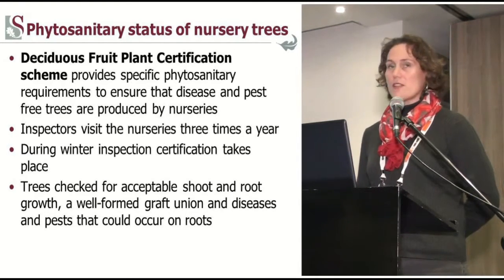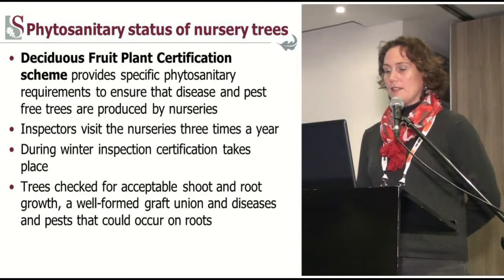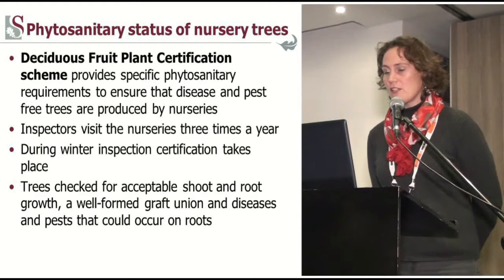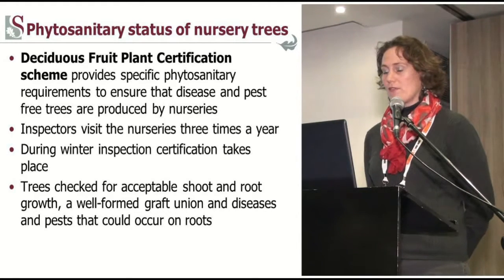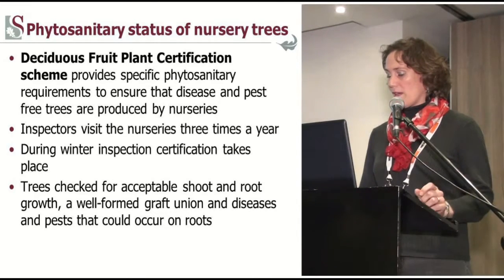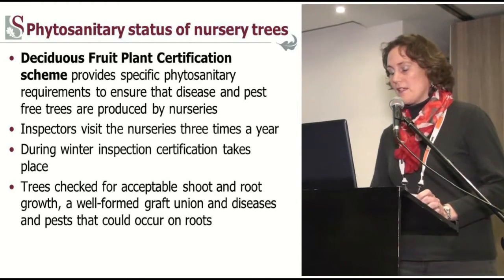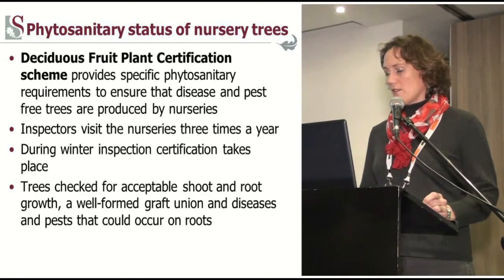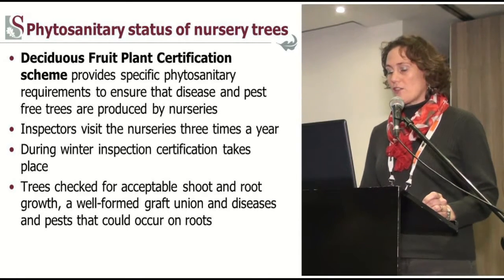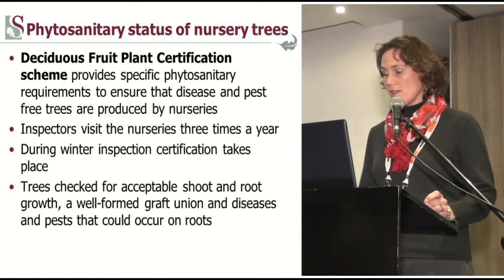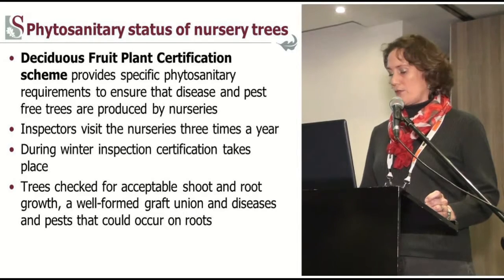The first point is we would like to start with a nursery tree that is healthy, and there's a specific system in place that helps us with that. The Deciduous Fruit Plant Certification Scheme provides specific phytosanitary requirements to ensure that disease- and pest-free trees are produced by nurseries. Inspectors visit nurseries three times a year, and it's with their final inspection in winter that certification takes place. Trees are checked for acceptable shoot and root growth, a well-formed graft union, and diseases and pests that can occur on the roots.